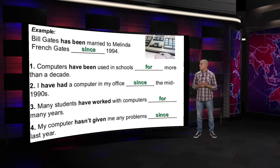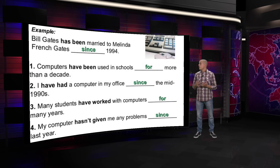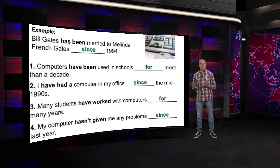Number four: My computer — third person singular, so you use HAS, in a negative form. My computer hasn't given me any problems since last year. It's clear that there has been a whole year since last year with no problems. Compare: 'the computer hasn't given me any problems for months' — we don't know how many exactly. But 'since last year' is more specific.